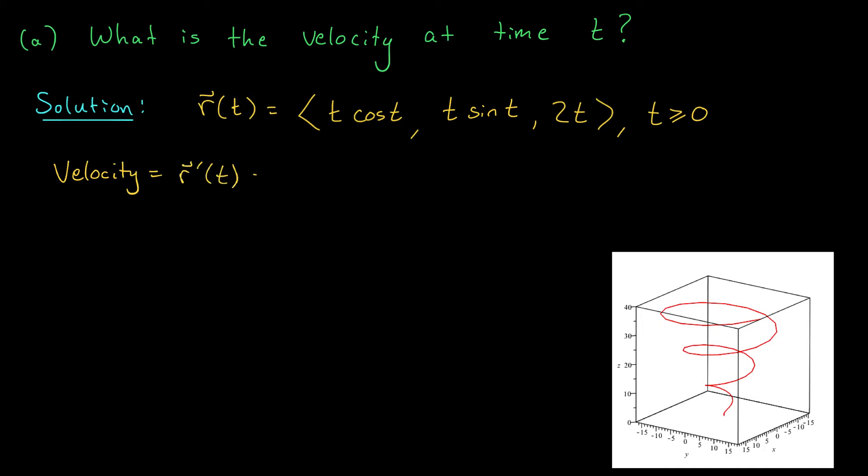As a reminder, I can get the derivative of this function by differentiating each component separately. So my vector is t cos t prime, t sine t prime, and 2t prime. It looks like in the first two components, I'm going to need the product rule. So in my first component, I take the derivative of t and leave cos alone. That leaves me with just cos t. And then I add t times the derivative of cos t. That's minus t sine t.